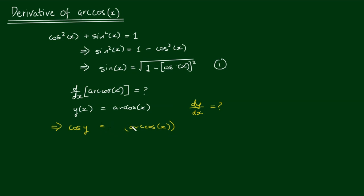because these are inverse functions, they cancel. And we just end up with cos(y) = x.